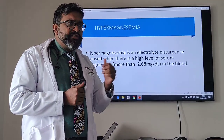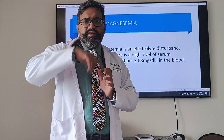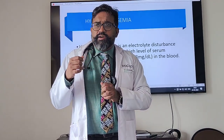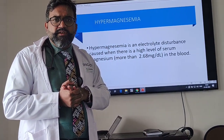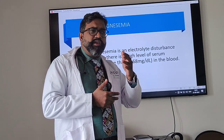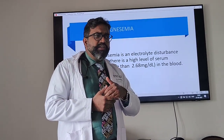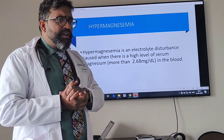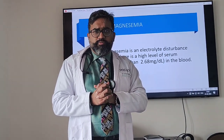Torsades de pointes is life-threatening and is one prime indication for magnesium. Torsades is basically the heart rate moving in wide twisting complexes around a certain axis. In this case, you give 4 grams as a bolus over 5 to 10 minutes — this is the only place where you give magnesium as a bolus. Everywhere else you give it over 1 to 2 hours. Then follow up with an infusion of 1 gram per hour. So torsades is the only indication for magnesium sulphate as a rapid bolus.